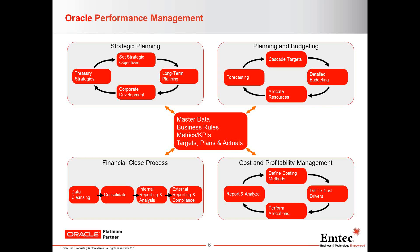Going clockwise, taking that strategic plan and actually putting it in place by developing budgets and plans — taking the strategic objective and letting it work in the field — looking at budgeting and planning: targets, forecasting, plans. In the bottom right-hand corner is cost and profitability management, getting into the granularity of how organizations work from an operational perspective, cost drivers. And ultimately in the bottom left-hand corner is the financial close process: closing the books, 10-K, SEC reporting, GAAP reporting, IFRS reporting.